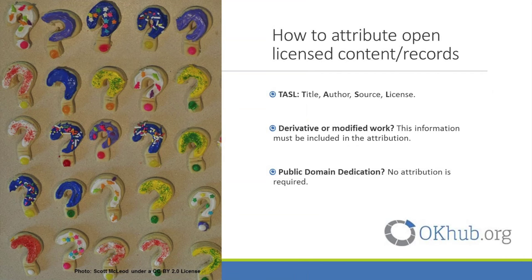A good rule of thumb for the elements to include in an attribution is the acronym TASL, which stands for Title, Author, Source, Licence. If you have created a derivative or modified work, this information must be included in the attribution. If a work or record has a public domain dedication, however, no attribution is required.